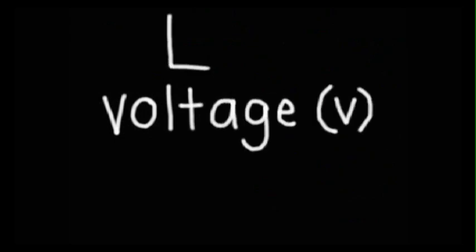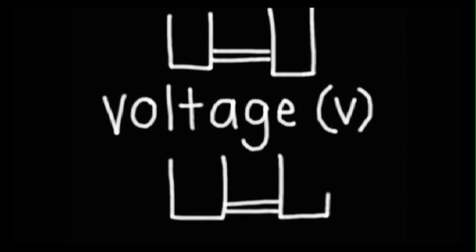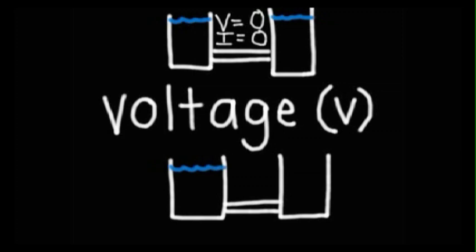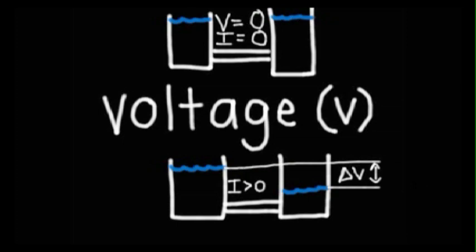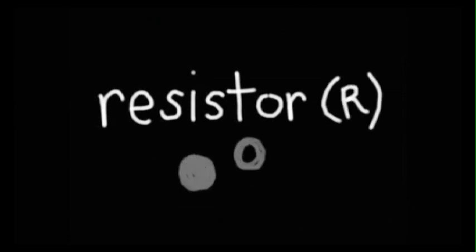The voltage V is a measure of the pressure provided to the electrons so that they can move. In water, if you have two containers at the same level and you connect them with a tube, no current flows between them as there's no pressure difference — the voltage is zero. But if you have two containers at different levels and connect them with a tube, there's a pressure difference and current flows from higher pressure to lower pressure. The resistor R can be thought of as obstacles to current flow, such as boulders in a river current.